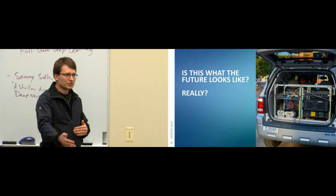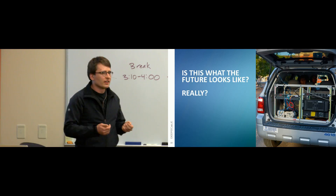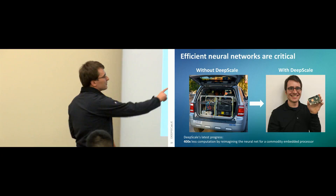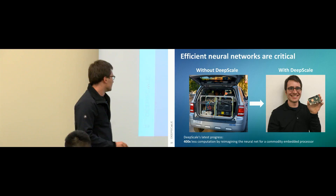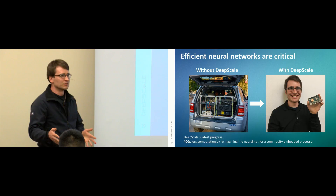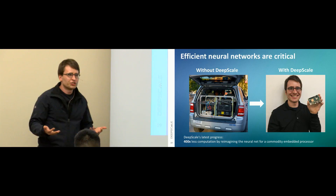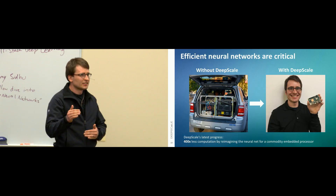At DeepScale we've probably made more progress than anyone else at getting rid of the server in the trunk. We go from that 8-GPU setup to something like a less-than-$100 processor very similar to what you'd find in a smartphone. We routinely get as much as 400 times — not 400%, 400 times, or roughly 40,000% — reduction in how much computation we need. This isn't by making a fancy chip; it's by looking at the neural net, thinking about it, using our experience, and doing full-stack work with automated neural net design search.